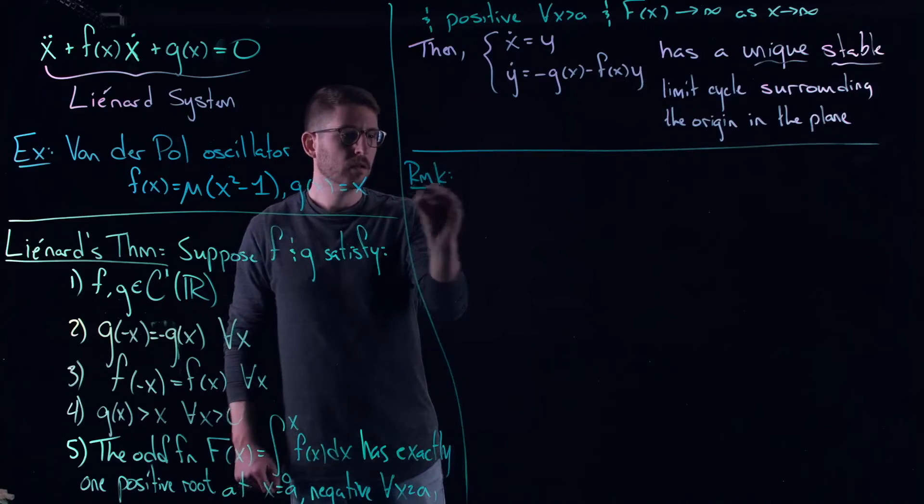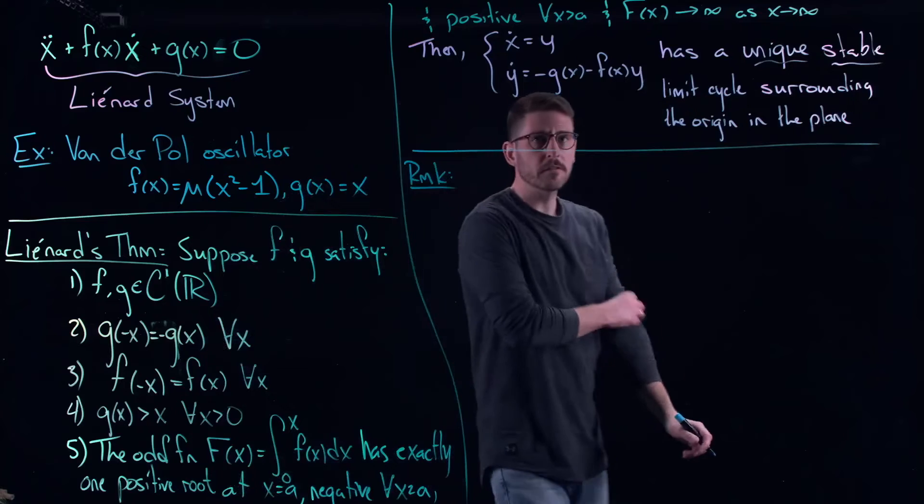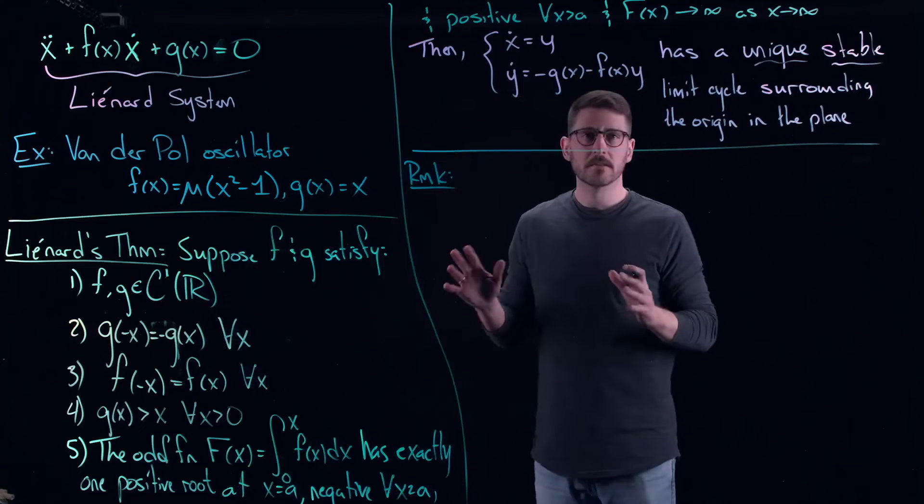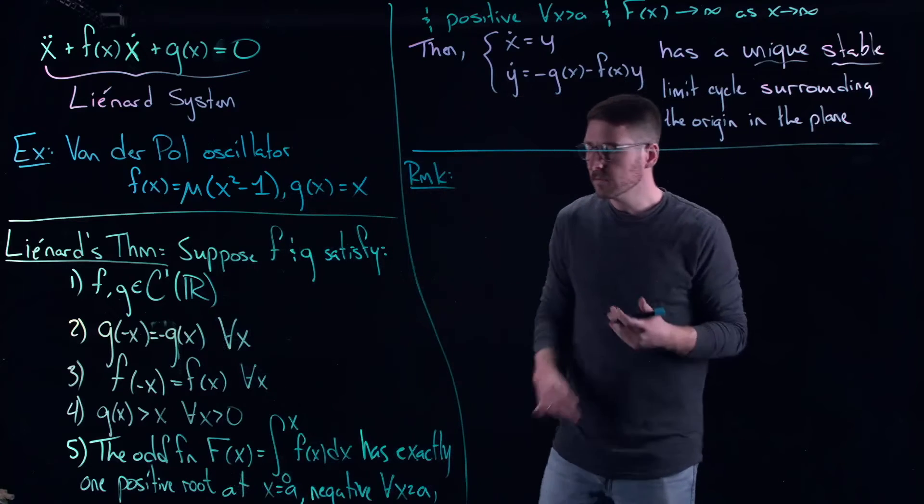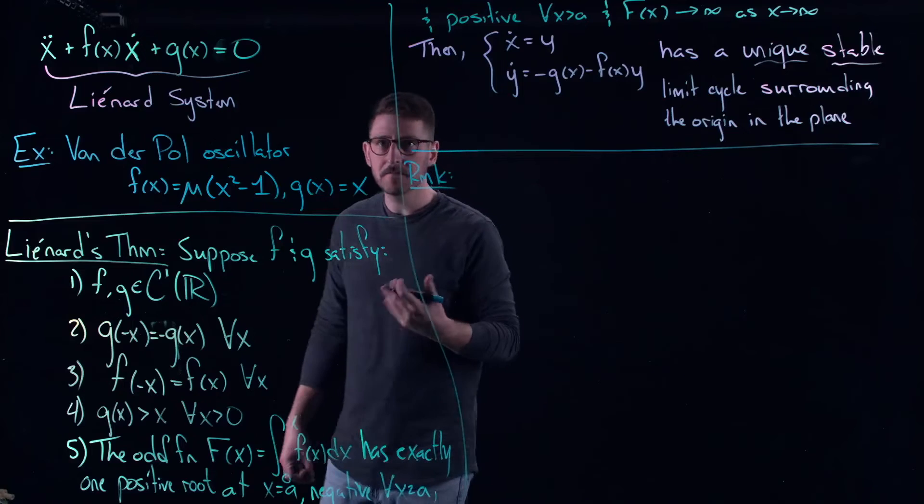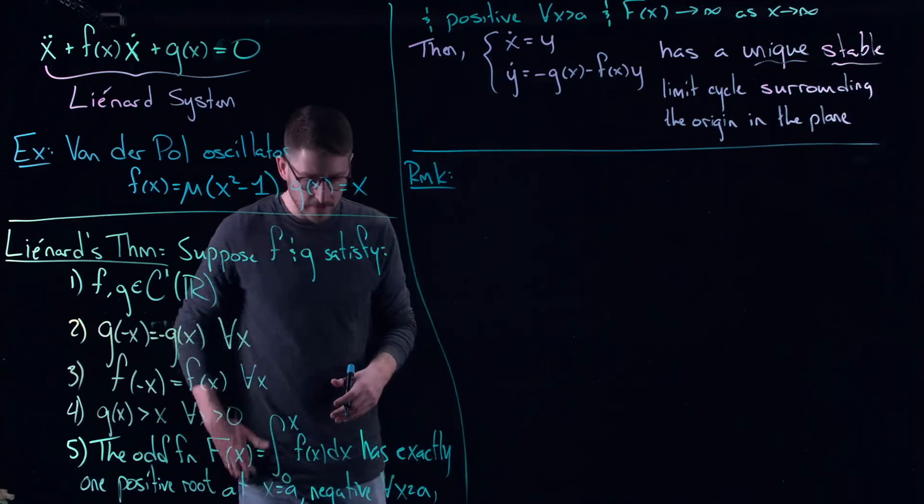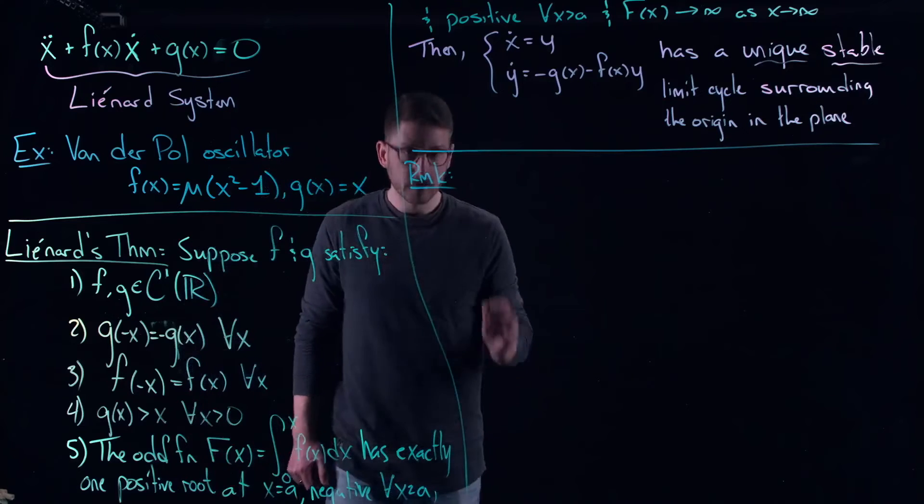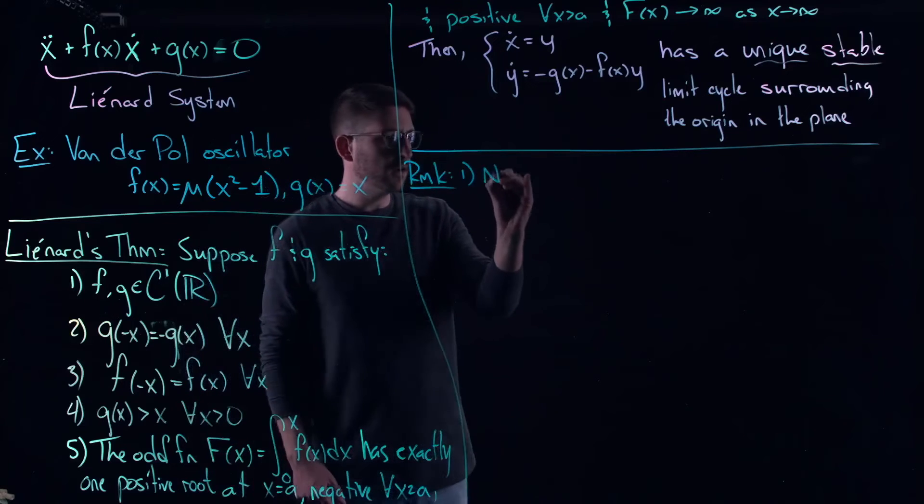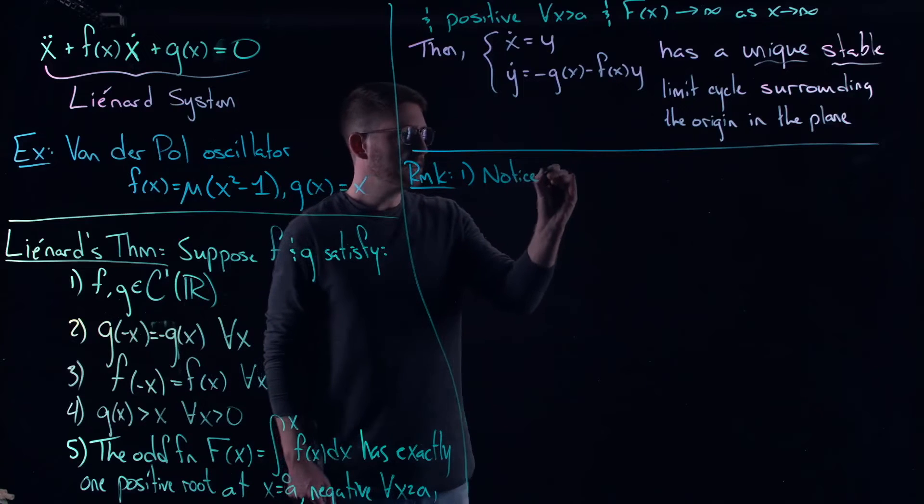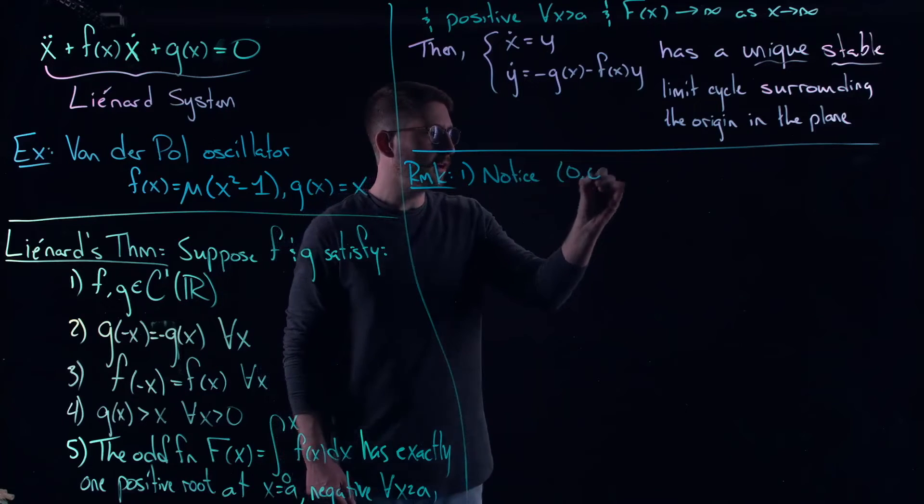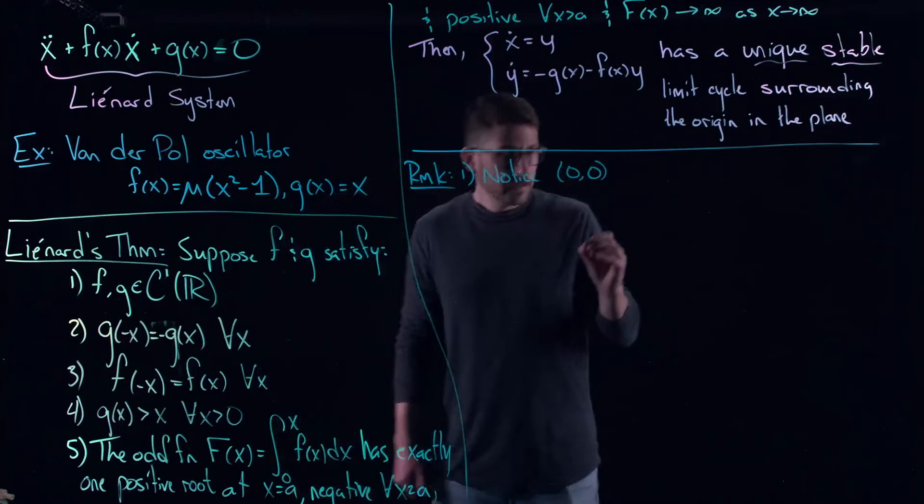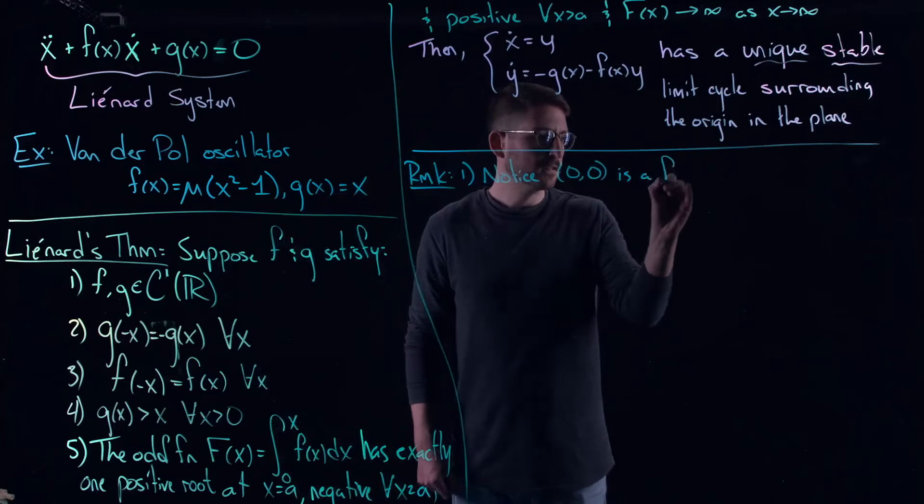All right, so how do we know sort of some aspects of this? I'm not going to prove this, it's actually you know a little bit more technical. You have to use a lot of deep sort of phase plane methods to prove this thing, but I want you to take a look at something for a minute. Okay so a couple remarks. So notice based on these things zero zero, the origin is a fixed point.